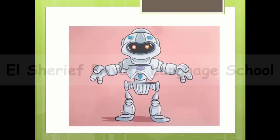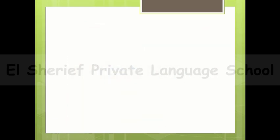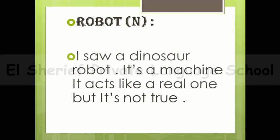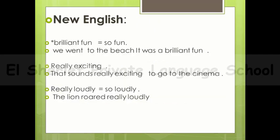The word robot. For example: I saw a dinosaur robot. It's a machine and it acts like a real one, but it's not true — it's artificial.